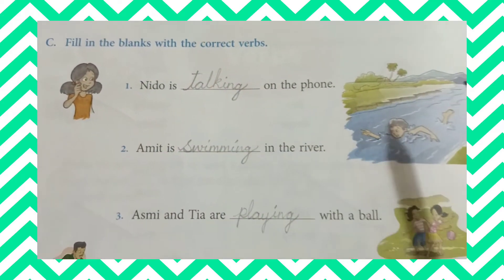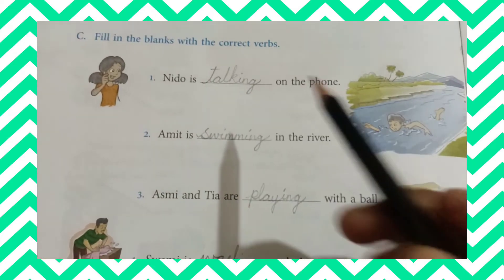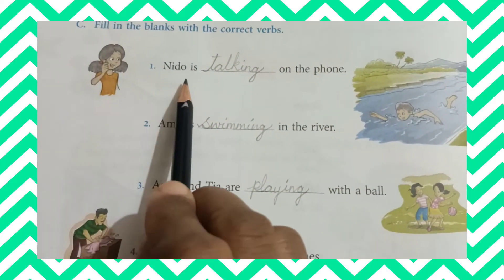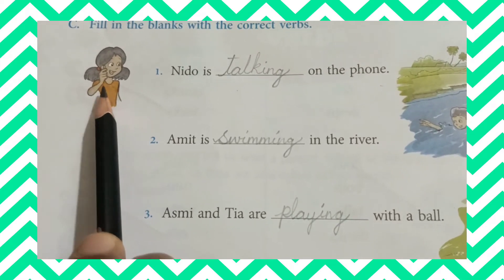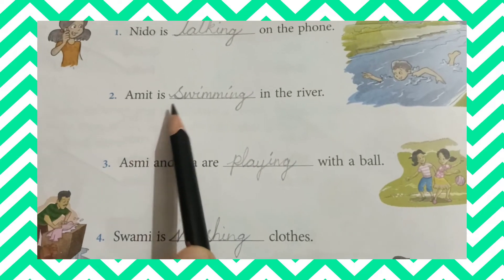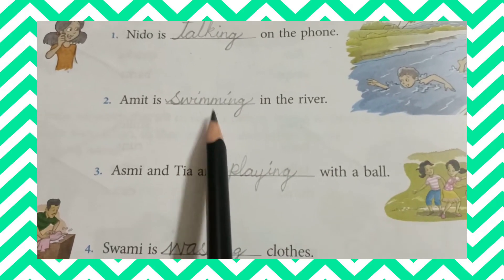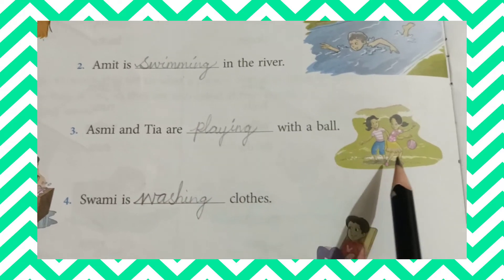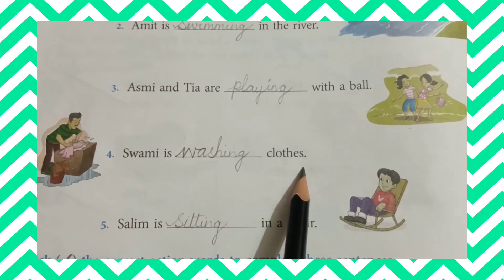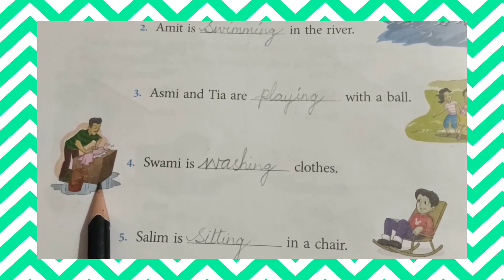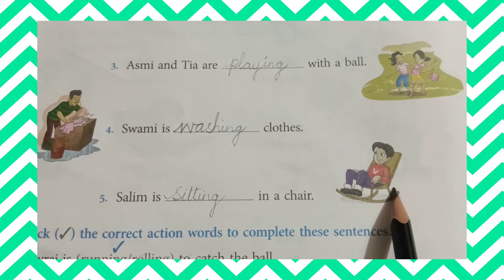Fill in the blanks with the correct words. Here they have given some nouns with actions — you have to write what the verb is doing. Where the needle is blank on the phone — what this girl is doing? Very good, children, she is talking. So write talking. Amit is blank in the river — swimming. Asmin and Tina are blank with a ball — they are playing. Sumin is blank clothes — washing. Salim is blank in a chair — sitting.